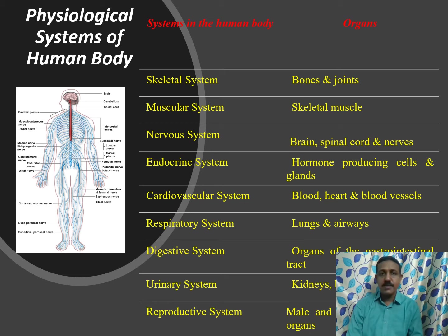Now we shall see about the physiological systems of the human body. The bones and joints form the skeletal system and the skeletal muscles form the muscular system. The brain, spinal cord and nerves constitute the nervous system. Hormone-producing cells and glands form the endocrine system. Blood, heart and blood vessels join together to form the cardiovascular system. Lungs and airways form the respiratory system. Organs of the gastrointestinal tract form the digestive system. Kidneys and urinary tract form the urinary system. Male and female reproductive organs form the reproductive system.